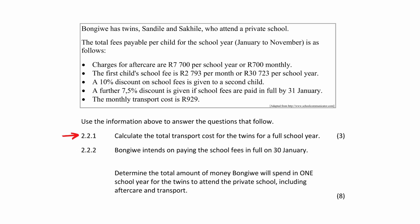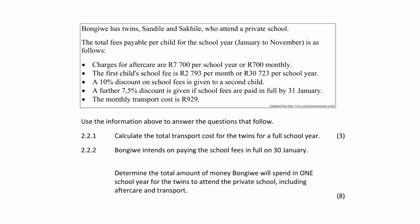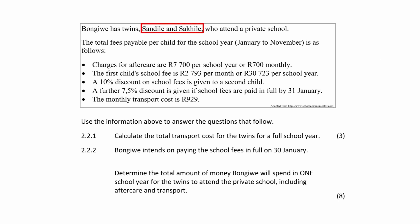In question 2.2.1, you have to calculate the total transport cost for the twins for a full year. The word 'school year' is important — a school year is taken as 11 months, from January to November. The monthly transport cost per child is 929 Rand, and the number of children is 2.